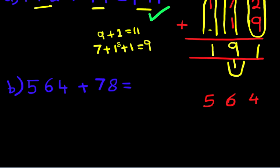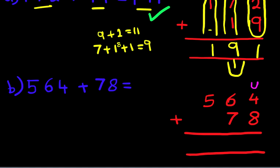564 plus 78. We can label the columns. Units, tens, and hundreds. So let's begin as we always do by adding the column on the right-hand side first.